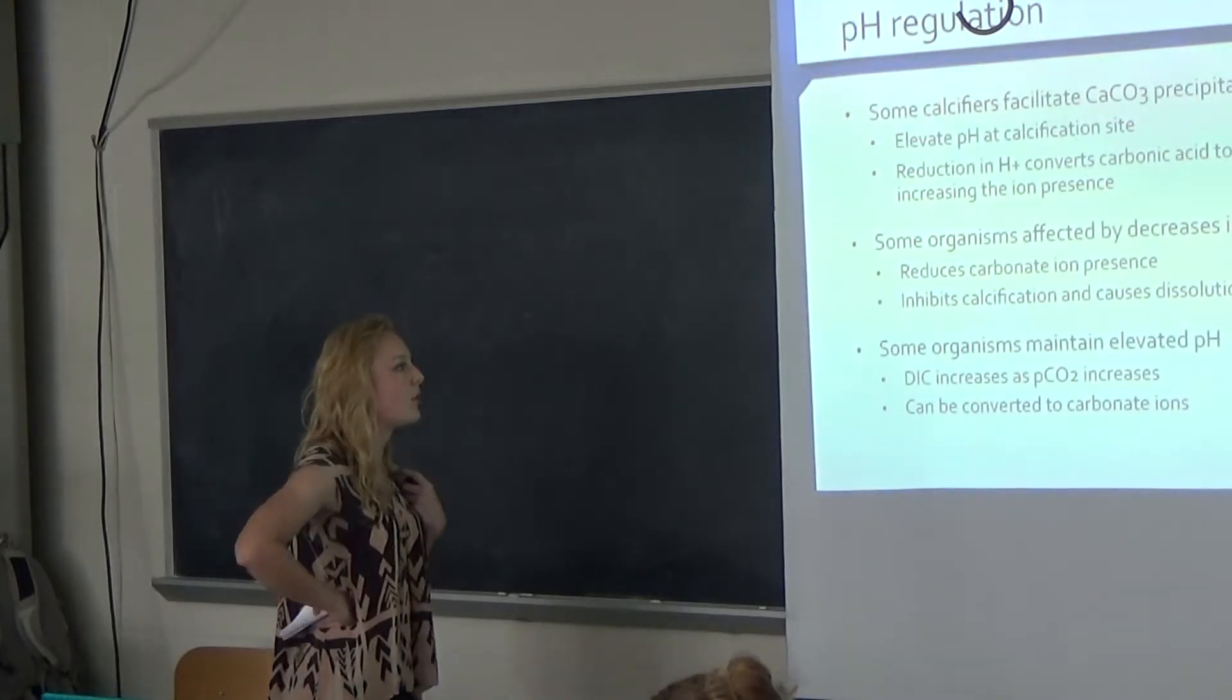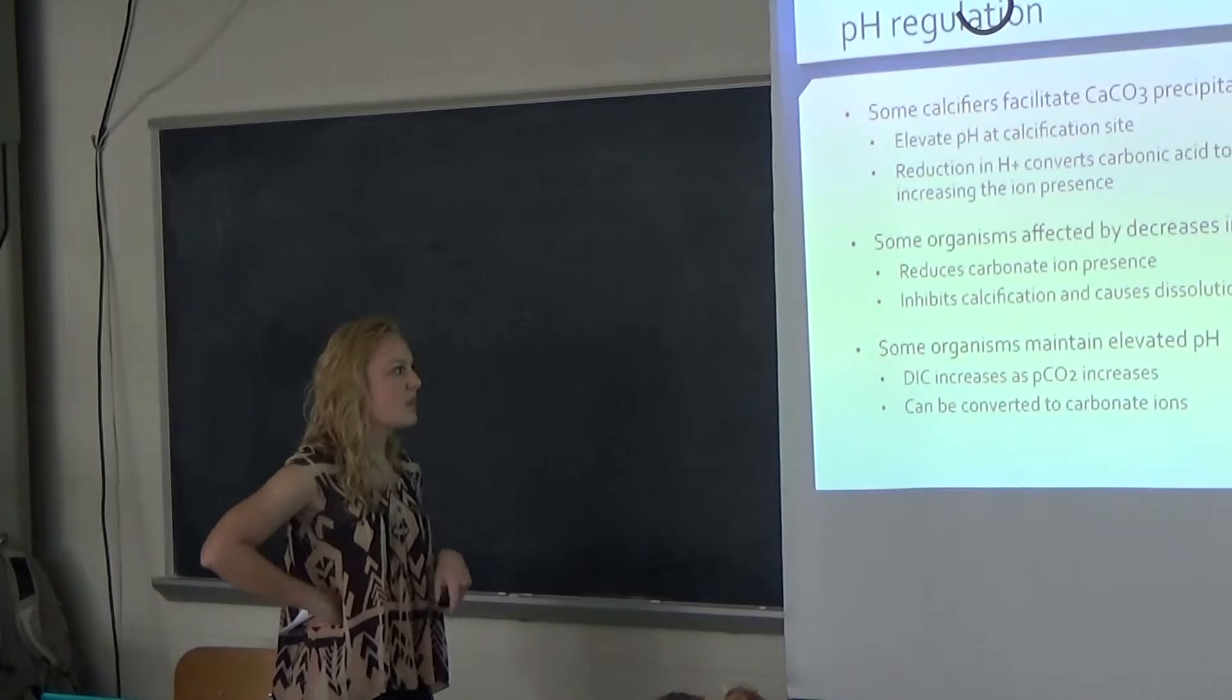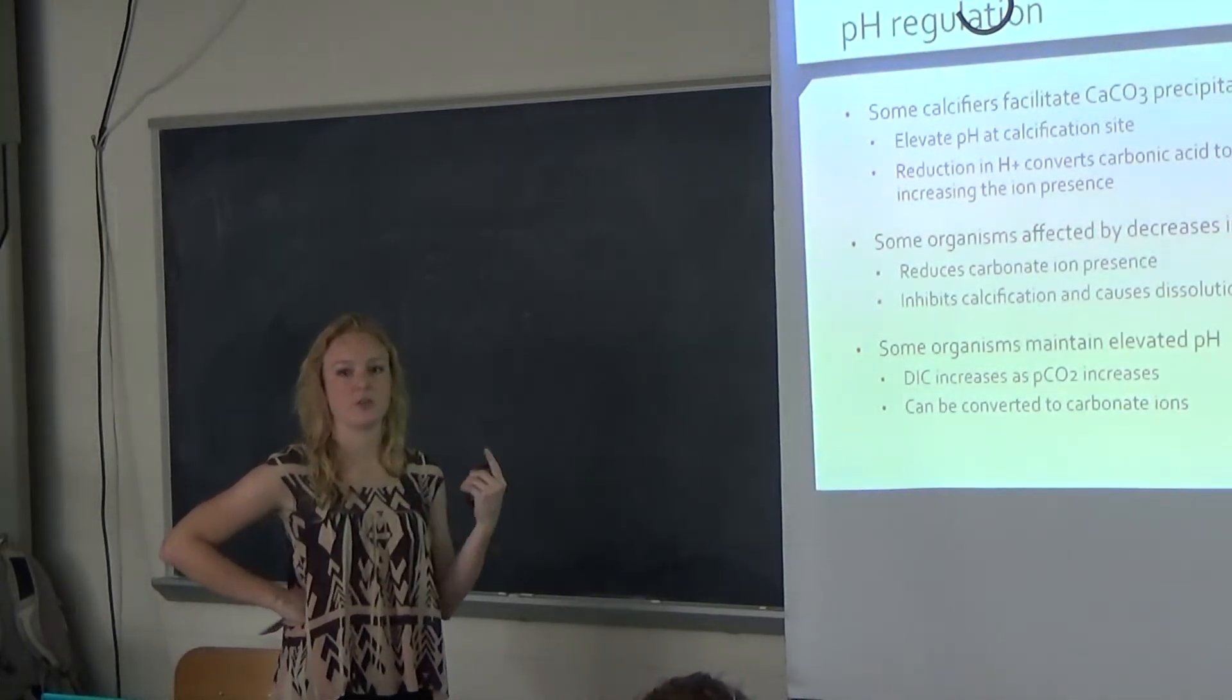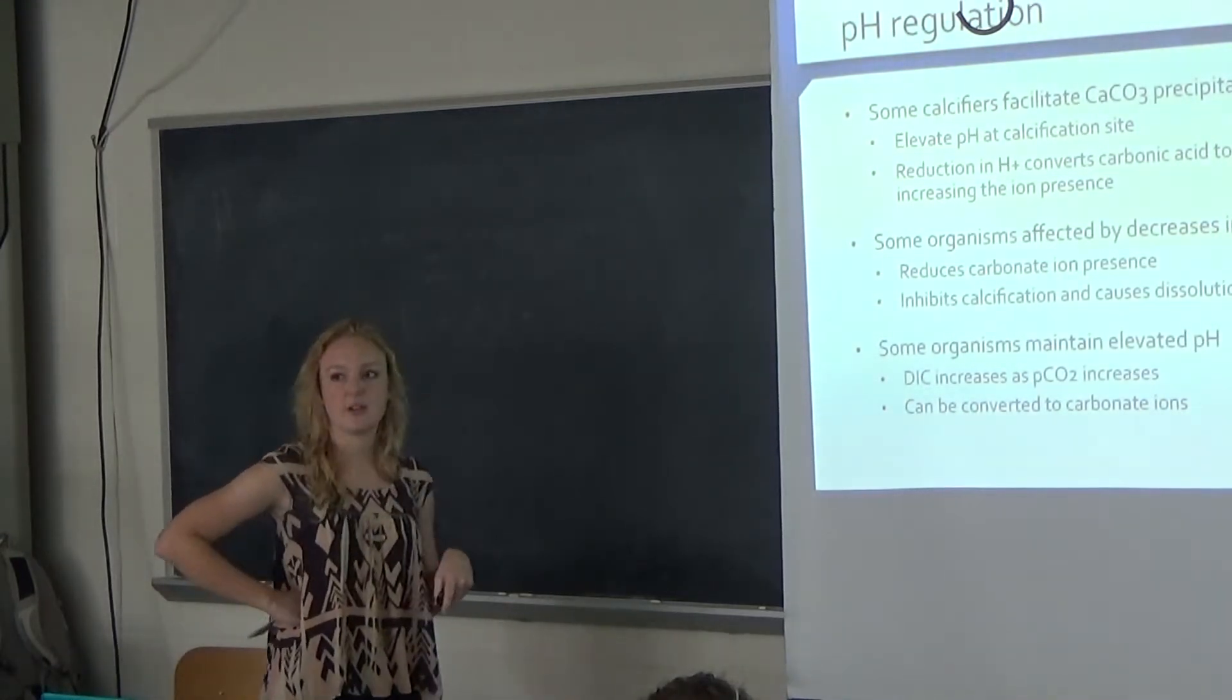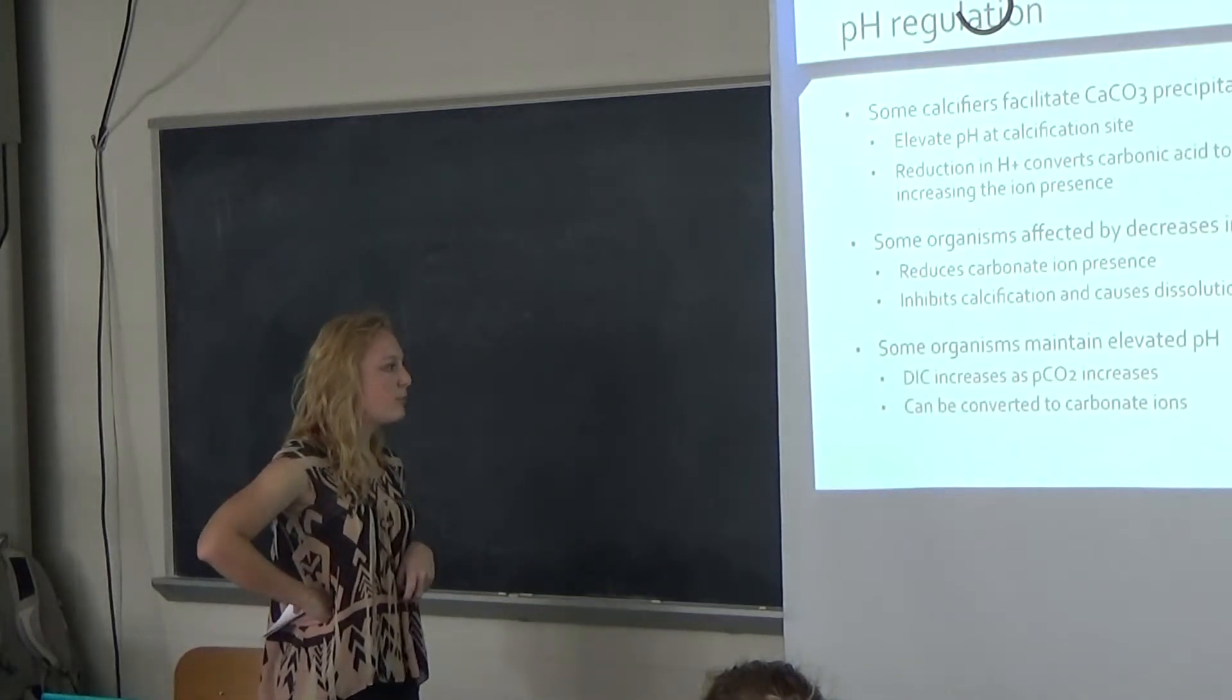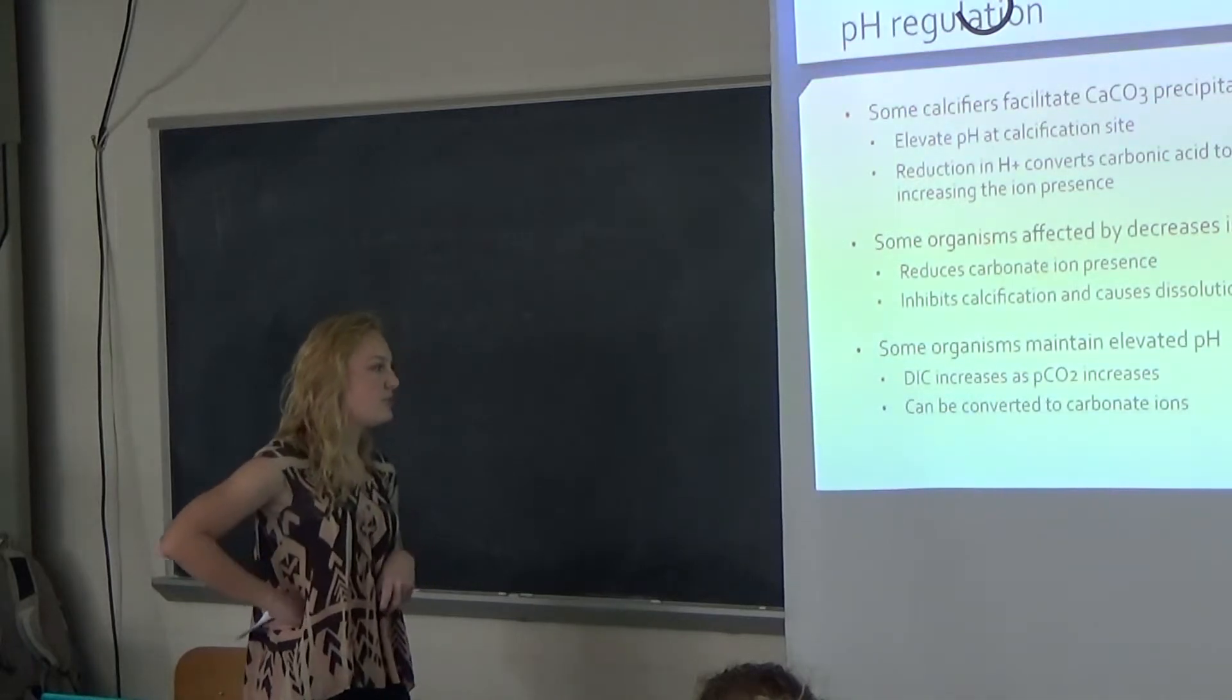Some organisms are affected by the decreases in the pH, which is what we saw with most of the species. We saw that when there was a reduction in the carbonate ion presence, there was a dissolution of the shell, and so it impedes their net calcification rates. They were slowing down as there was an increase in the carbon dioxide. For some of them, they actually maintain an elevated pH regardless of what the carbon dioxide levels were. They do this through dissolved inorganic carbon, where they increase as the levels of atmospheric carbon coming down, and they can convert the DIC into carbonate ions.